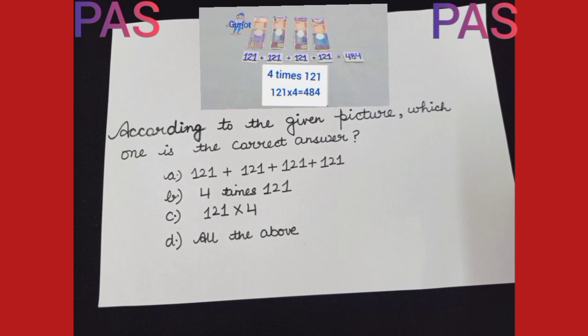Option A, 121 plus 121 plus 121 plus 121. Option B, 4 times 121. Option C, 121 multiplied by 4. Option D, all the above.